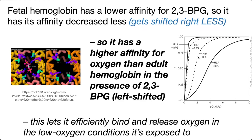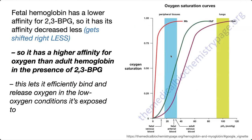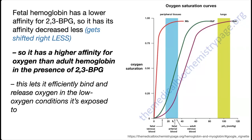This means that under the same conditions, fetal hemoglobin is going to have a higher affinity than adult hemoglobin, which allows it to take the oxygen it needs from the low availability of oxygen it encounters. If you think about the oxygen levels the fetus encounters — fetal arterial blood and fetal venous blood — there's not that big of a difference, especially compared to the shift from your lungs to adult venous blood, where you have a huge shift versus only a small shift in oxygen concentrations for the fetus.